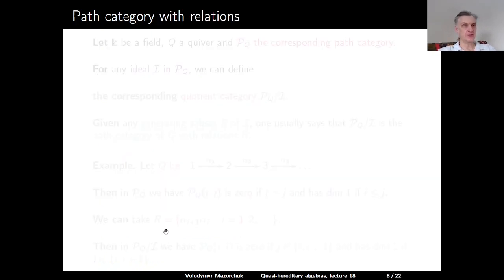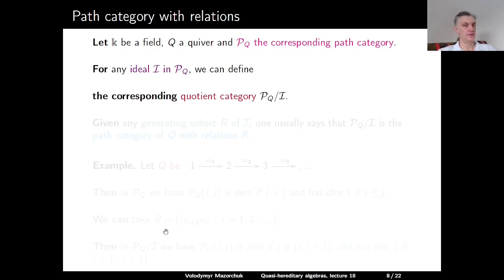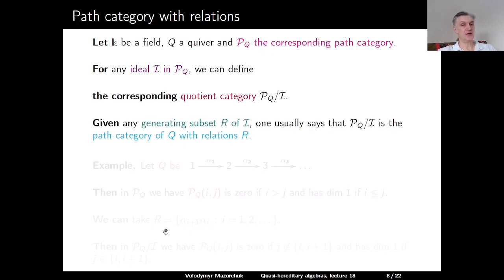The path category can be further extended to a path category with relations. Let k be a field, Q a quiver, and PQ the corresponding path category. For any ideal I in PQ, we can define the corresponding quotient category PQ/I. If we are given a generating set R of this ideal I, then one usually says that PQ/I is the path category of Q with relations R.